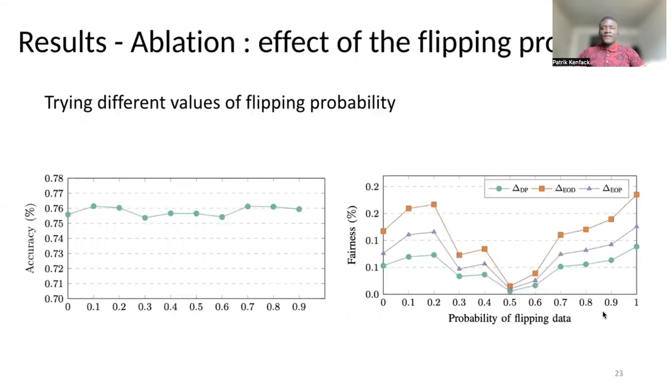In the ablation study, we studied the effect of the flipping probability. When training batches, we randomly flip the sensitive attribute of certain individuals. We can see that the accuracy does not vary much, but we can use it as a hyperparameter that can be changed. Here, we see that 0.5 is the point where we achieve better fairness properties. Depending on the dataset, maybe a different probability will be better.